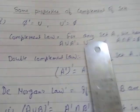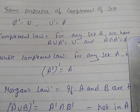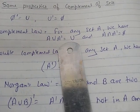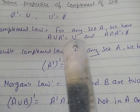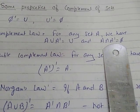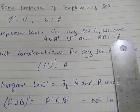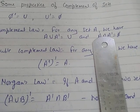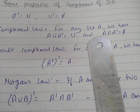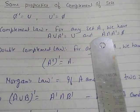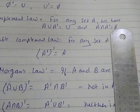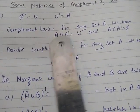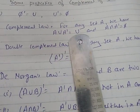Complement law: For any set A, A union A complement equals U, and A intersection A complement equals phi. Because nothing is common in these two sets — A complement means not in A, and A is the set, so the common part is phi. And A union A complement covers either in A or in A complement, which means the whole universal set U.